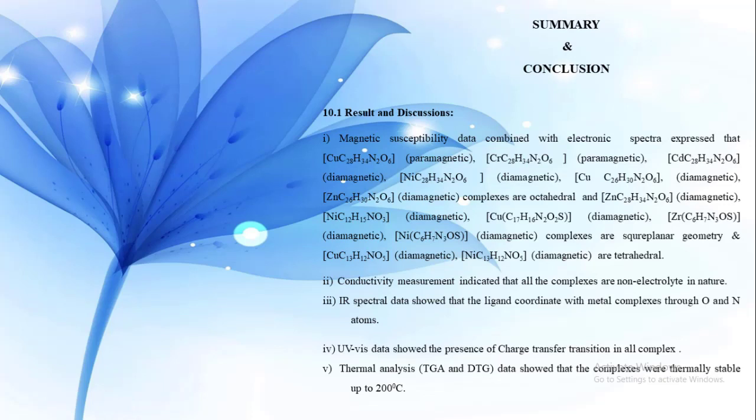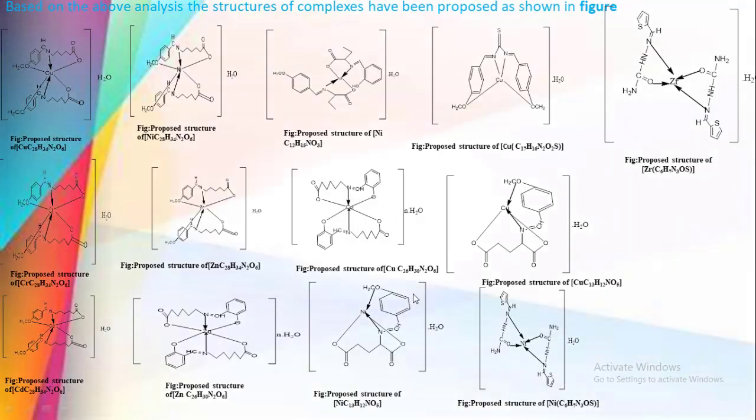Summary and conclusion. Results and discussion: magnetic susceptibility data combined with electronic spectra expressed that these compounds have octahedral geometry and these complexes are square planar or tetrahedral. Conductivity measurement indicated that all the complexes are non-electrolyte nature. IR spectral data showed that the ligand coordinates with metal complex through oxygen and nitrogen atoms. UV-visible data shows the presence of charge transfer transition in all complexes. Thermal analysis data showed that the complexes are thermally stable up to 200 degrees Celsius.